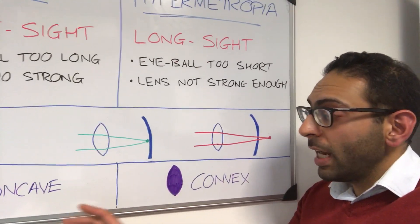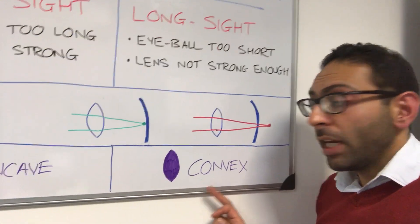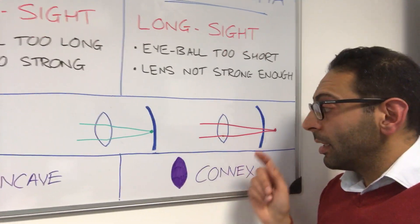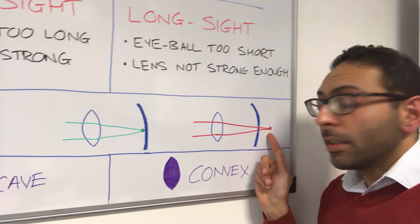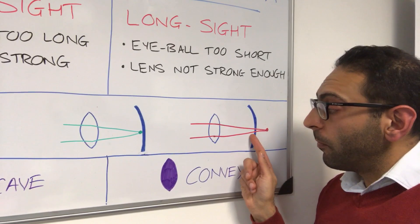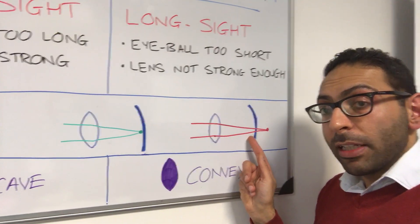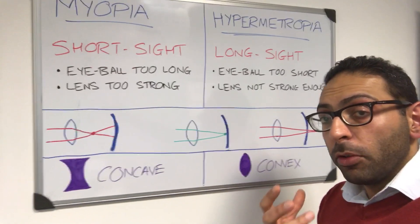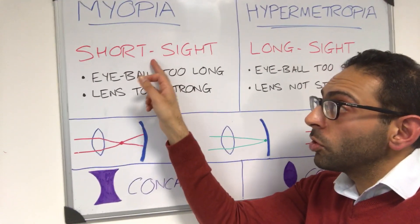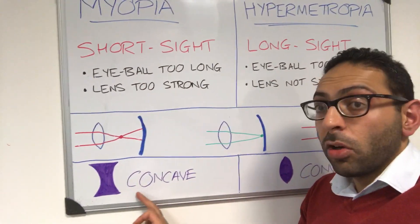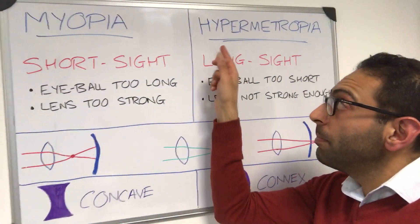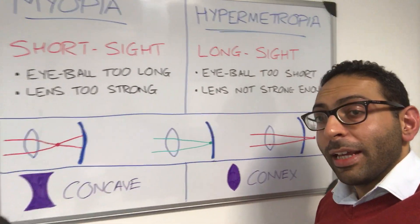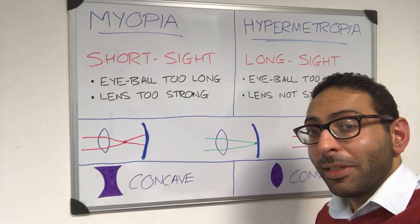For long sight you use a convex lens — a slightly different shape — which also goes in front of your own lens. The end result is that the focusing, which would otherwise happen beyond the retina, is brought forward to land right at the retina point, giving you that clearer, sharper image. So to summarise: myopia or short sight uses a concave lens, and hypermetropia or long sight uses a convex lens.